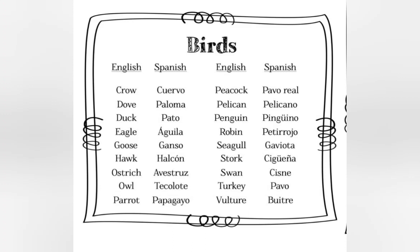Stork: cigüeña. Swan: cisne. Turkey: pavo. Vulture: buitre.